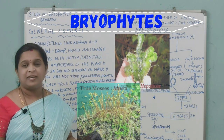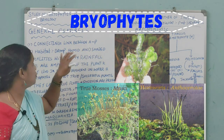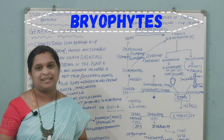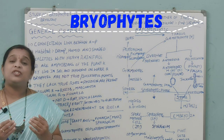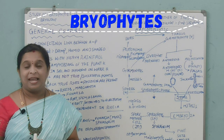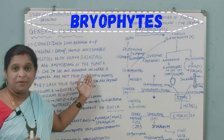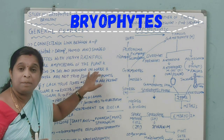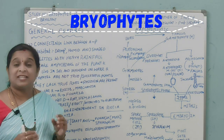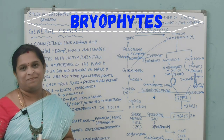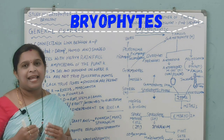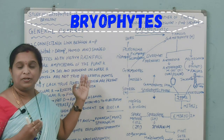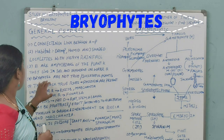These bryophyte species prefer to survive in damp, humid, and shaded places with heavy rainfall. Bryophytes are also called the amphibians of the plant kingdom. The term amphibian refers to species that can survive both on land and in water. Bryophytes are called amphibians of the plant kingdom because they live in soil but depend on water for reproduction, just as the frog is an amphibian in the animal kingdom.